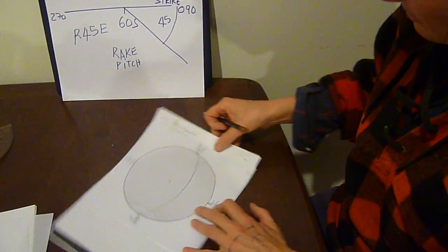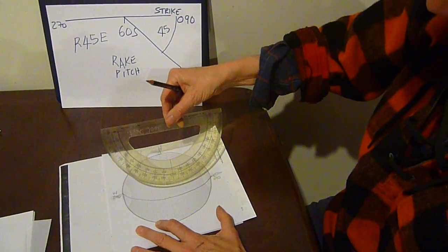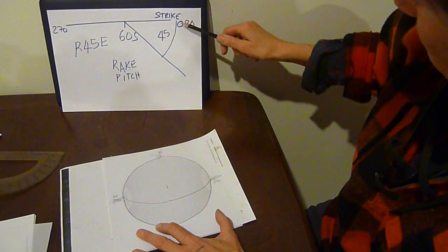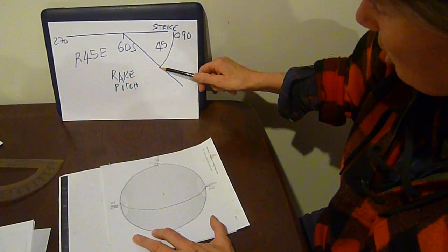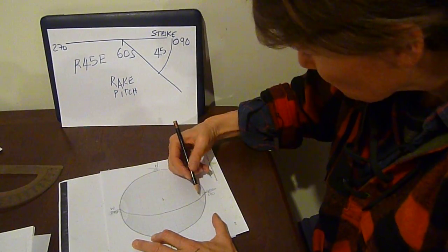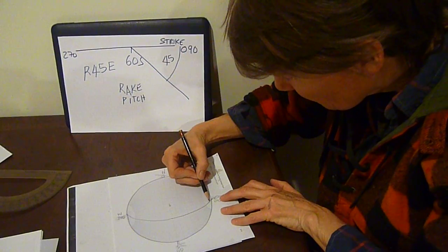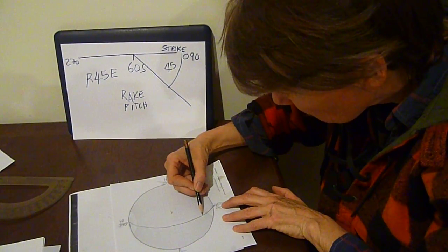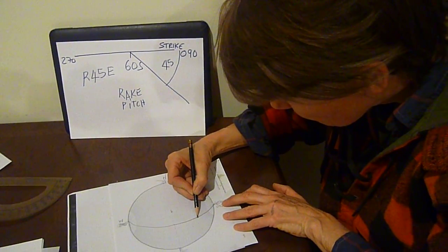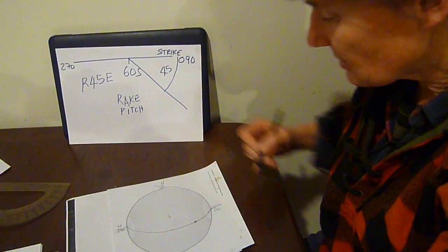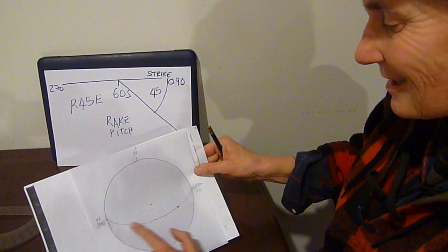Now, if you think about it, the great circle is simply a protractor. So starting from the 090 side, count along the great circle 45 degrees. So here's 090 — come in 10, 20, 30, 40 — 45 degrees is there. Now I've plotted the position of the line in the plane.